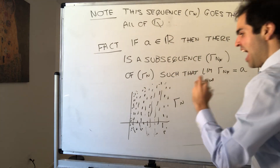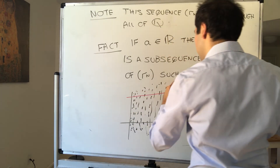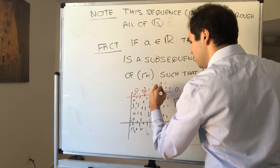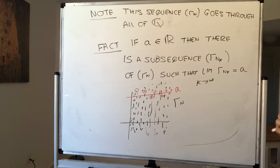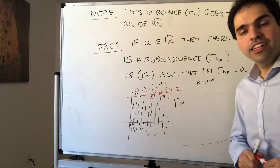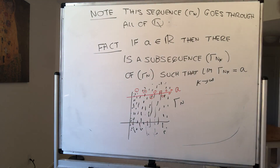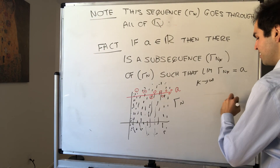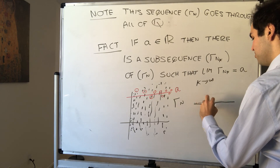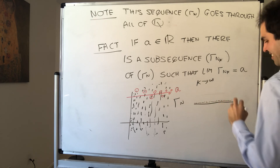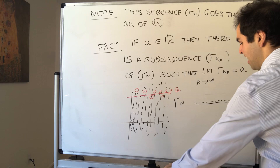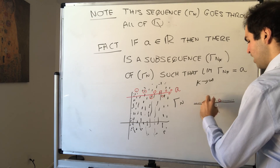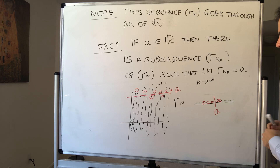But even though this is completely chaotic, there's actually an order to this chaos. If I give you any real number a — not only a rational number — there is some subsequence of r_n that converges to a. And this really has to do with the fact that the rational numbers are dense in the real numbers.